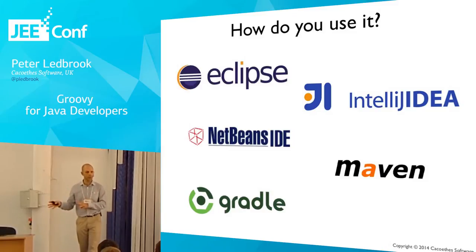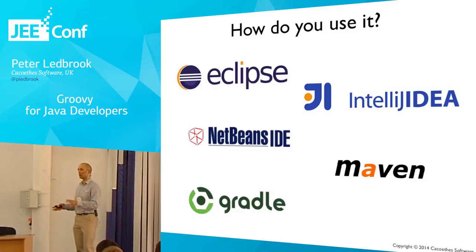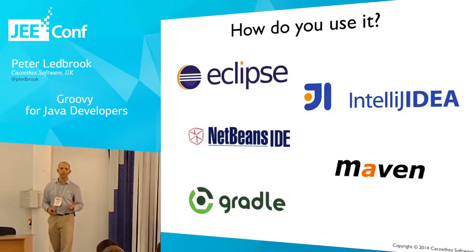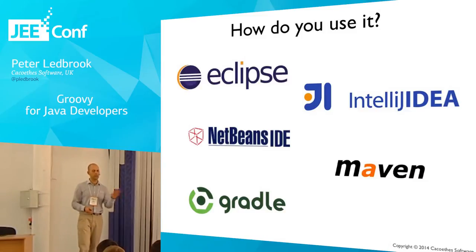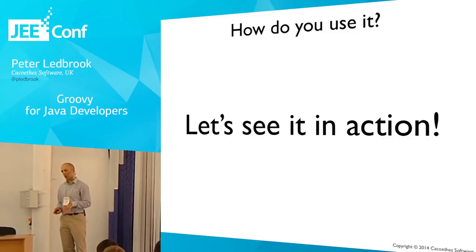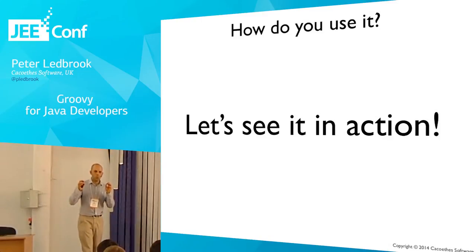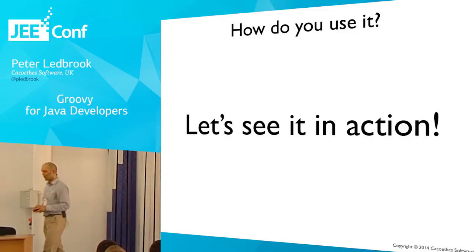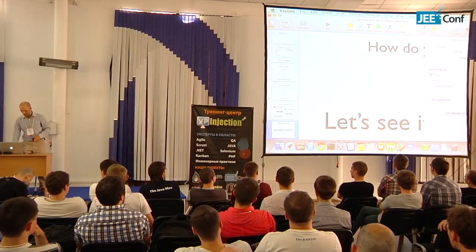Of course, the other sort of tooling are the build tools — Maven, Gradle, Ant as well. These all have Groovy options for compiling Groovy and Java together. So those are the ways that you use it, but why would you use it? What would you use it for? I'm going to switch to live coding at this point in time.